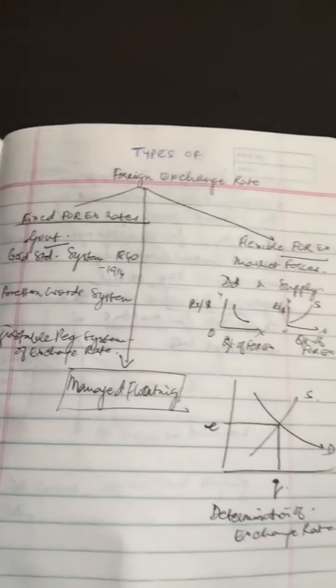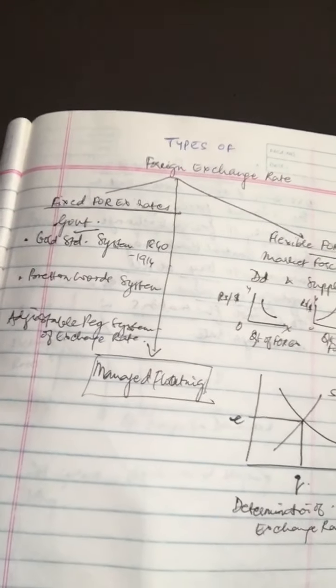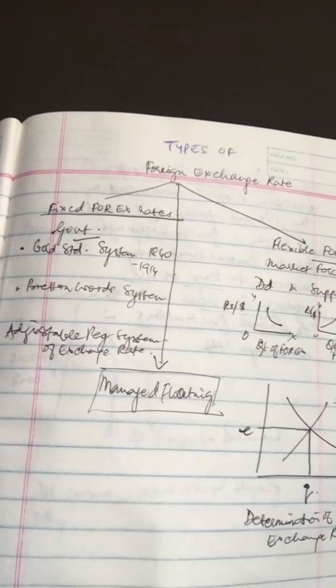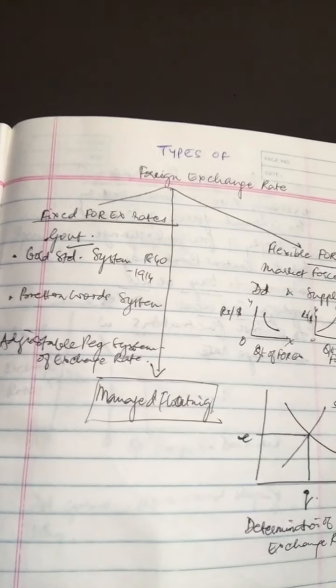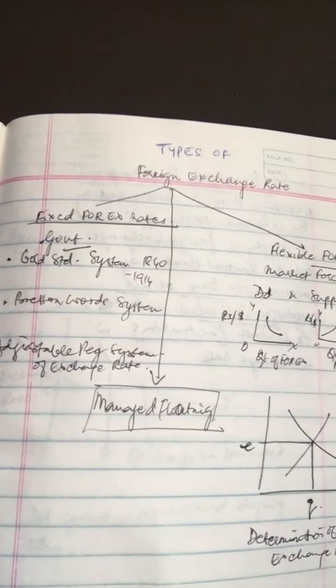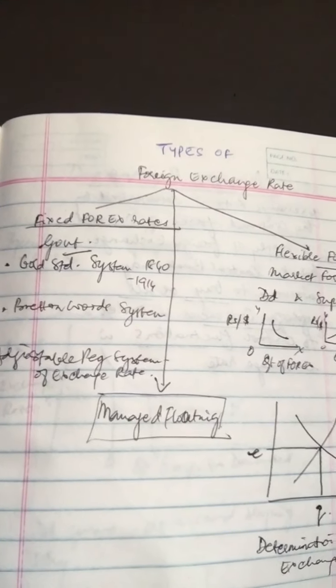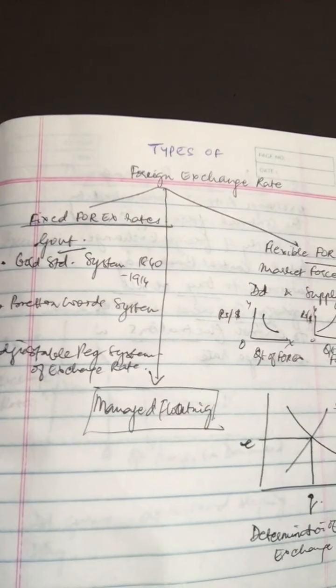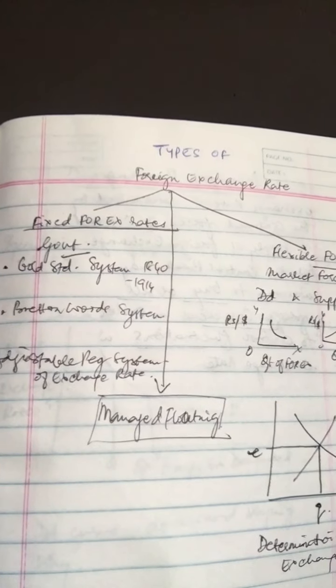I just want you to go through this. Foreign exchange rate, also known as forex rate, is the price of one currency in terms of another, which we've already discussed. It links the currencies of different countries and enables comparison of international costs and prices.